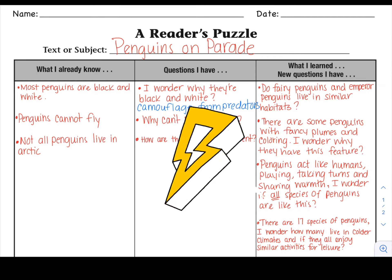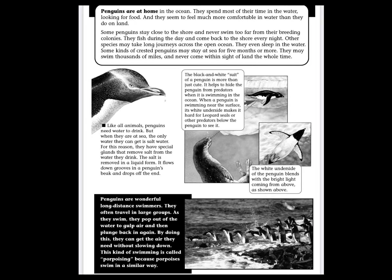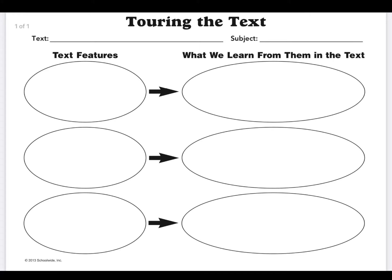Now that we've activated our prior knowledge, we're going to tour the text. What you'll need today is the text that looks like this — it's called Penguins Are at Home. You'll find this in your school-wide notebook or your packet of shared texts. You'll also need this Touring the Text Organizer, which can be found in your school-wide notebook, and of course a pencil.